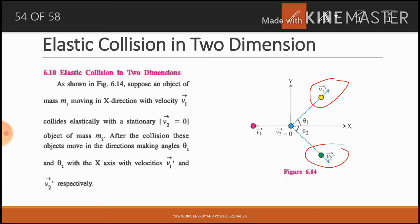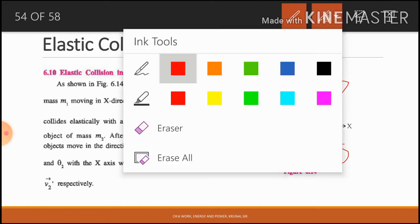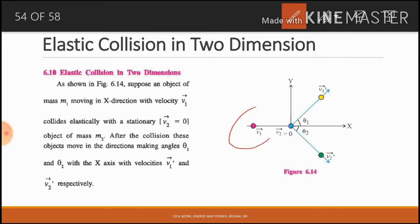As shown in the figure, suppose an object of mass M1, moving in the x-direction with velocity vector V1, collides elastically with a stationary object. The red color indicates mass M1 with velocity vector V1. The blue body is M2, which is stationary — its initial velocity V2 is equal to zero. After collision, the objects move making angles theta1 and theta2 with the x-axis, with velocities vector V1' and vector V2' respectively.